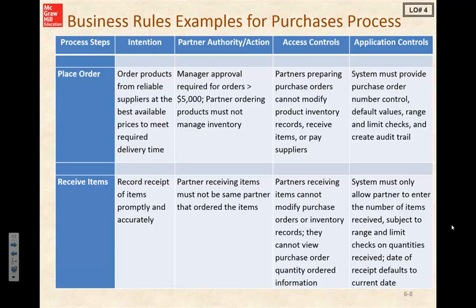To ensure data integrity, the system must only allow partners to enter the number of items received, subject to range and limit checks on quantities received. The date of receipt defaults to the current date. That kind of sums up Sunset Graphics and their purchase process — thanks for joining me.